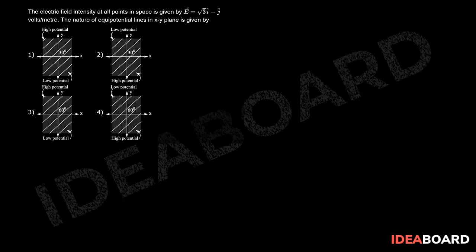The electric field intensity at all points in space is given by E equals root 3i minus j cap volts per meter. The nature of the equipotential lines in xy plane is given by: